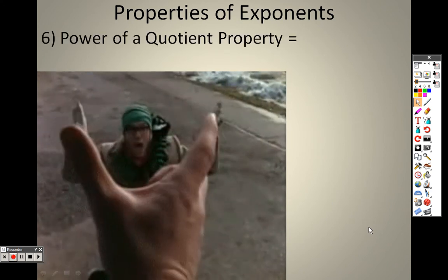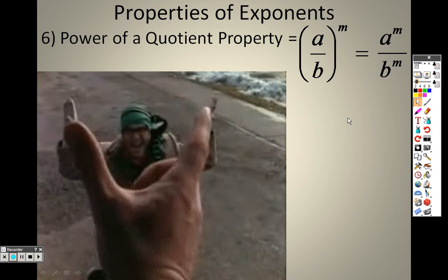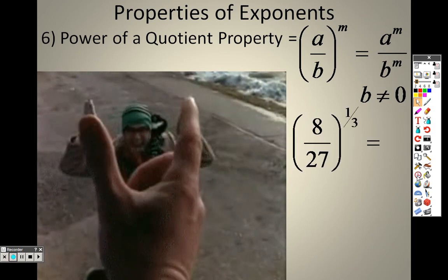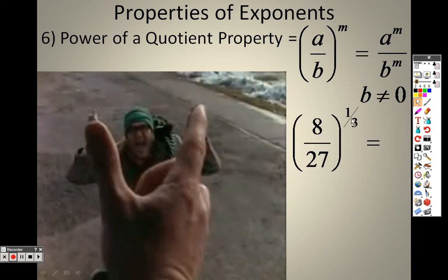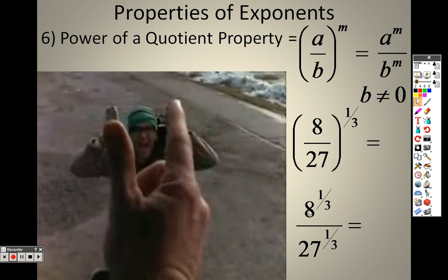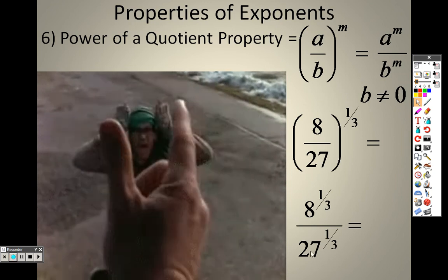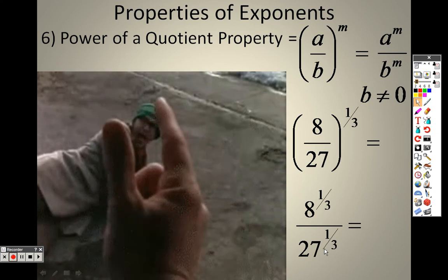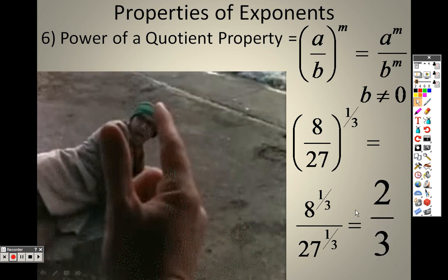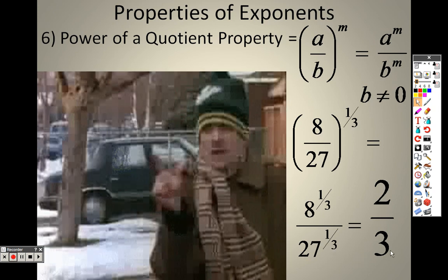The Power of a Quotient property: if you have a fraction inside, you just take the exponent through to both items, giving you a to the m over b to the m. Same deal with a rational exponent — I take it through to both, getting 8 to the one-third and 27 to the one-third. The cube root of 8 is 2 (since 2 times 2 times 2 = 8), and the cube root of 27 is 3 (since 3 times 3 times 3 = 27). So the answer is two-thirds.